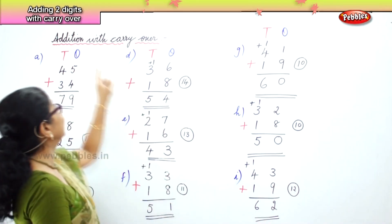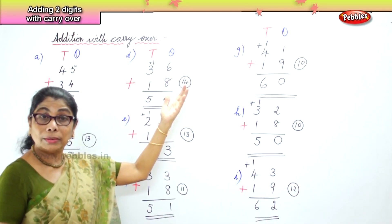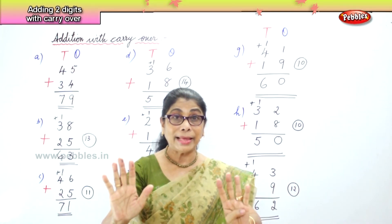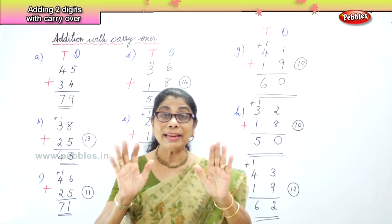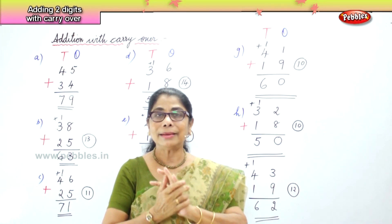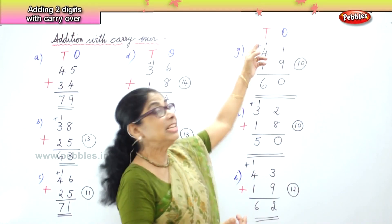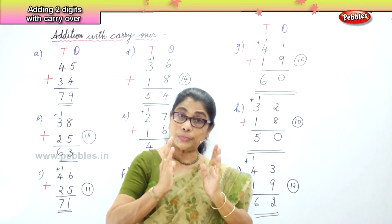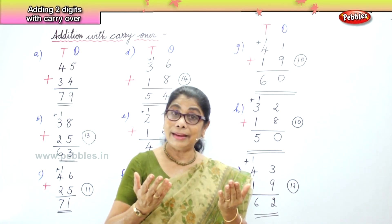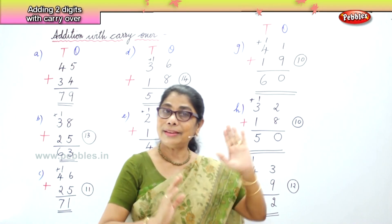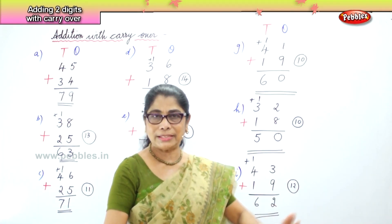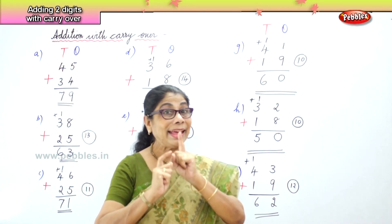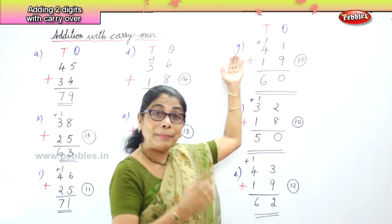I hope you have learned addition with carryover. What is the meaning of carryover? In the ones place, you cannot have more than nine. When you have ten ones, ten ones become one ten. That one ten you carry over to the tens place and add with the tens. That is called carryover. If it is nine in the ones place and you add one more, you have ten ones — that becomes zero ones and carries over to become one ten.